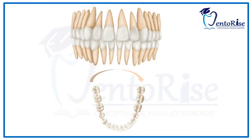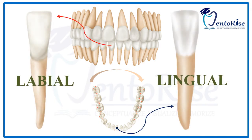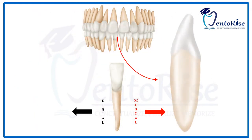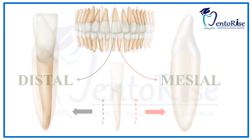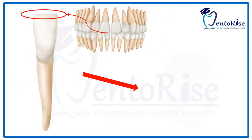Following the similar approach as we followed in the maxillary incisors, we will be dealing with the anatomy of permanent mandibular central incisors under 5 headings. These are the labial aspect, the lingual aspect, the mesial aspect, the distal aspect and the incisal aspect.